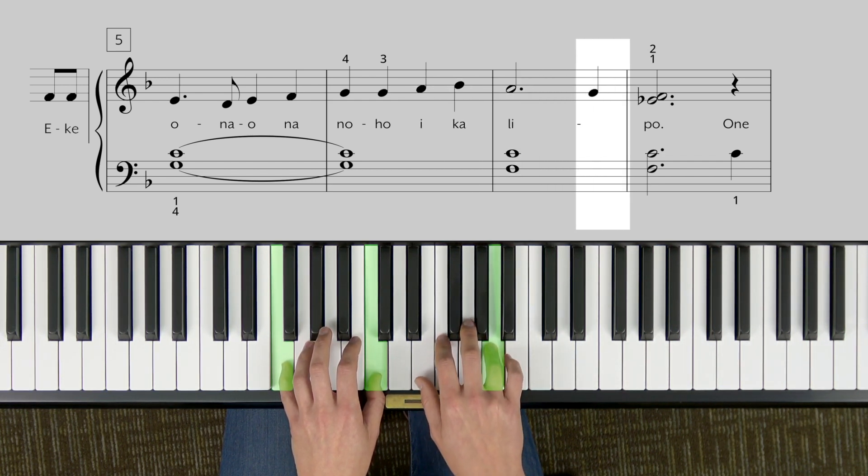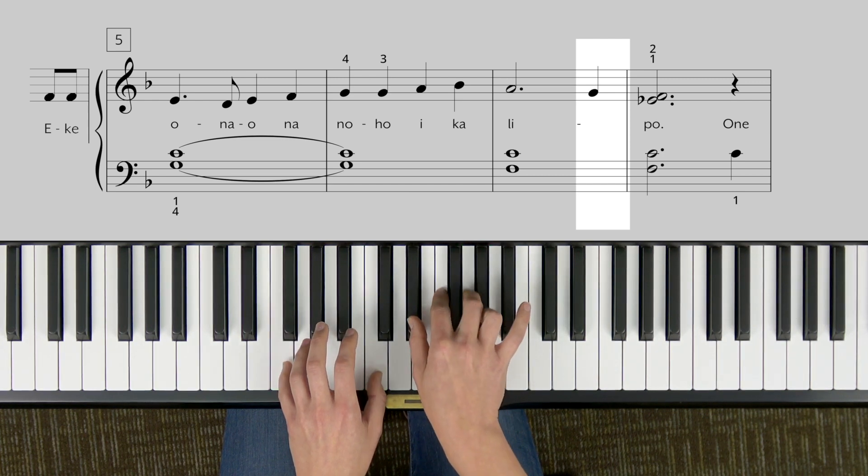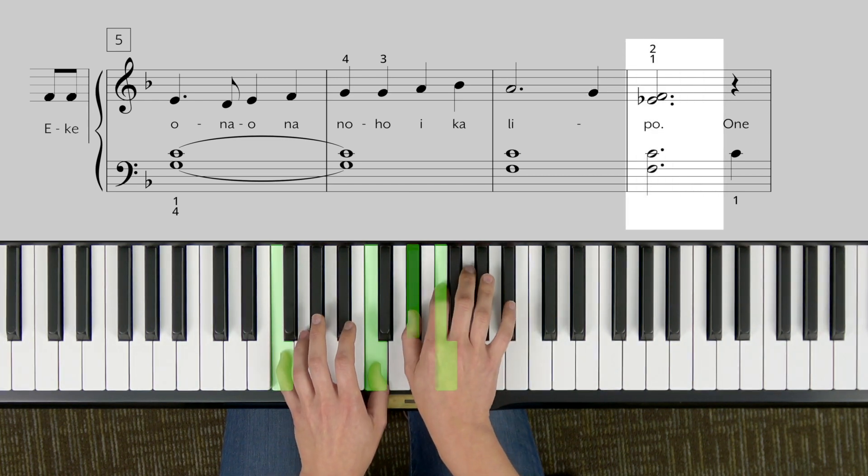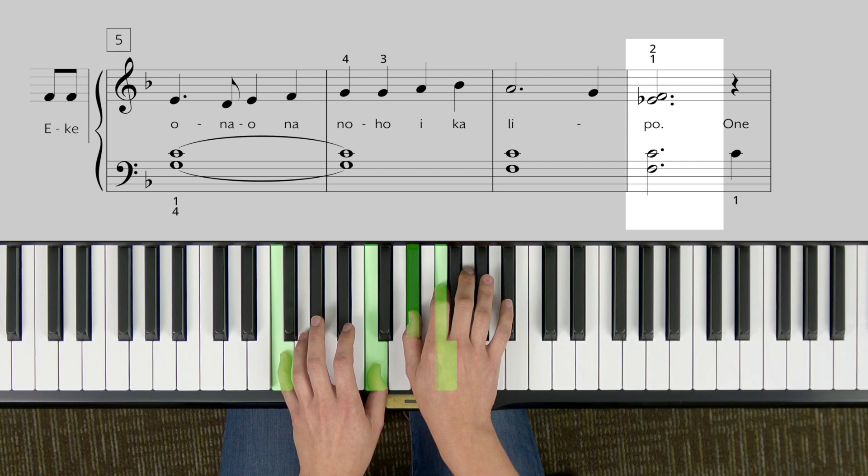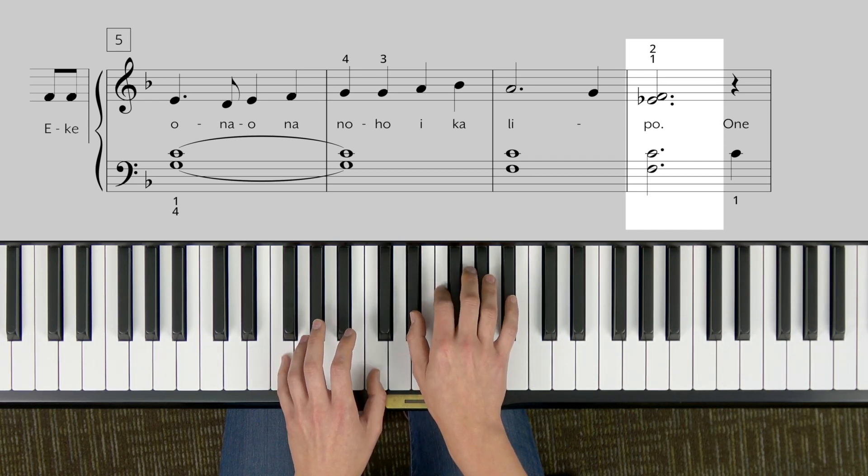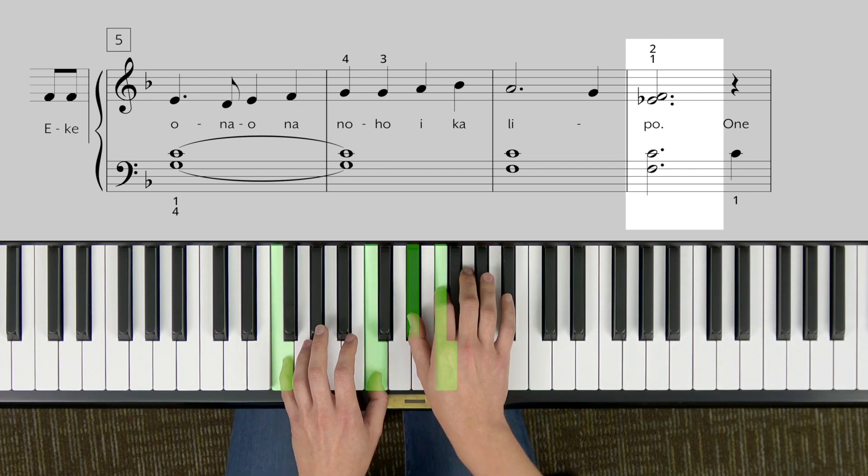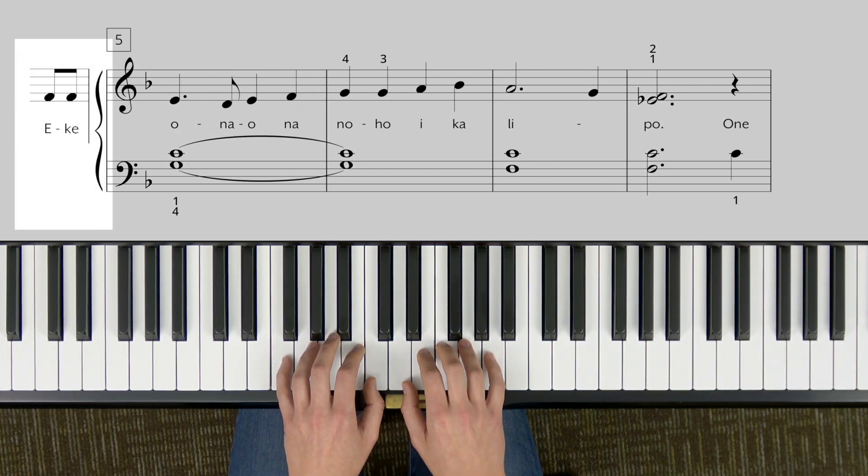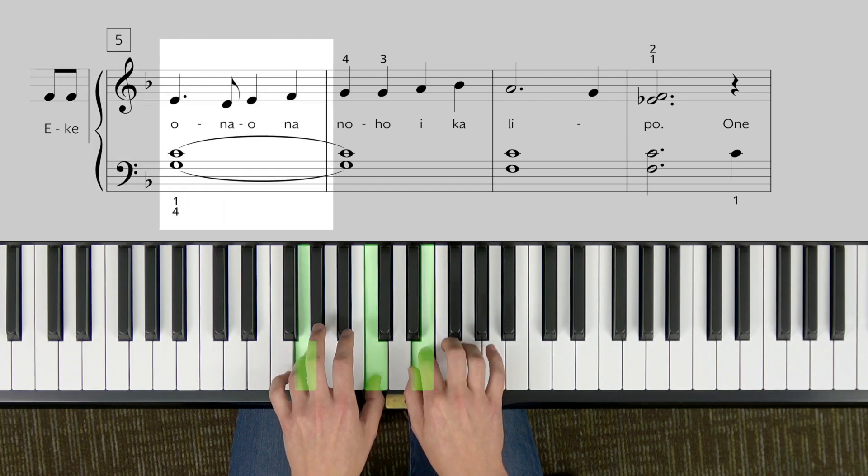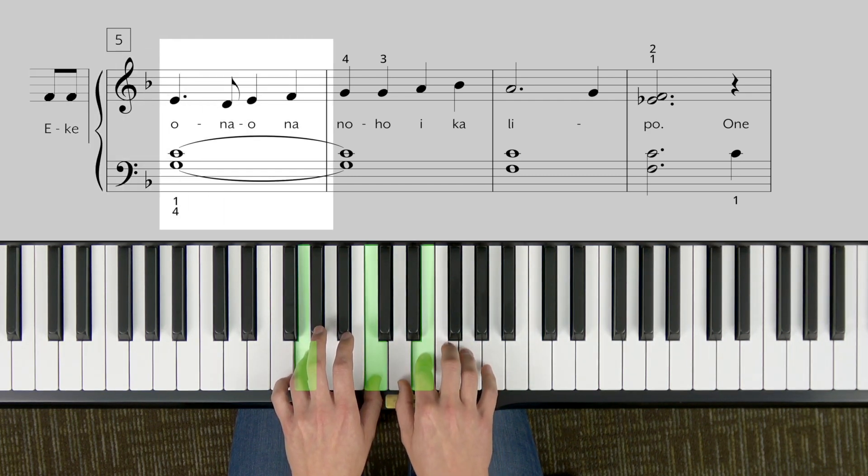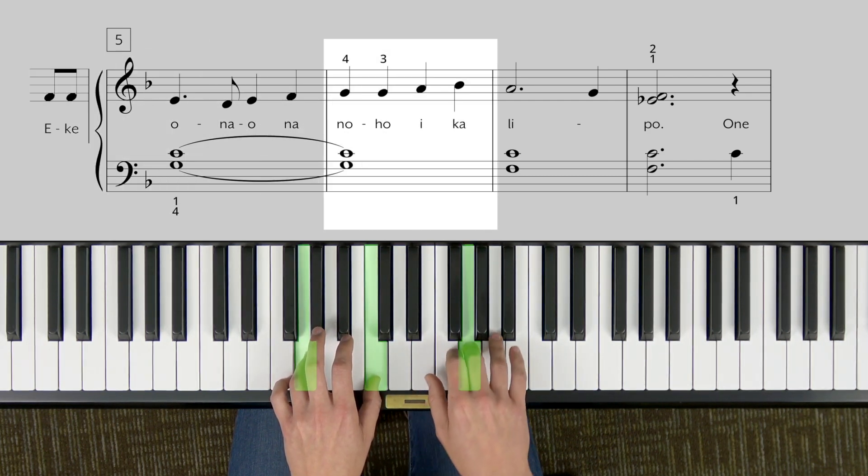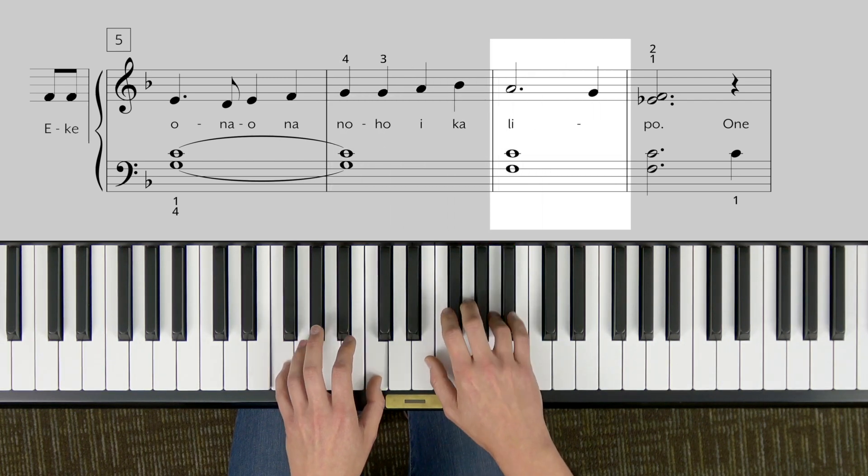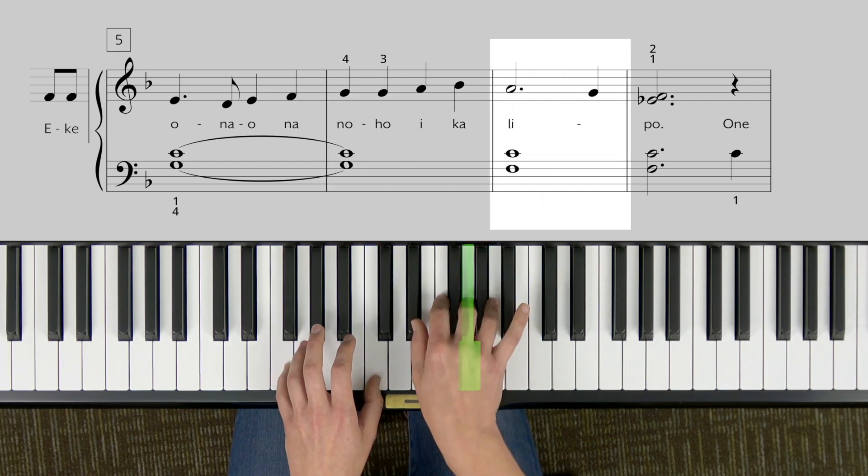And that's on eke li, right there, on li. And then going on, your right hand plays another note and you repeat the chord while you play that chord with your right hand. Remember that E flat F? Of course you do. Okay, going back to eke ona onoho eke li po.